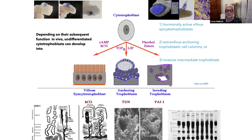When the expanded blastocyst enters into the stroma of the endometrium, cytotrophoblasts differentiate into three different syncytiotrophoblasts. The first is the villous syncytiotrophoblast, which is hormonally active and produces hCG. The second is the anchoring trophoblast — extra-villous anchoring trophoblast cell columns that enter the endometrium — and the invasive intermediate trophoblast. All these different trophoblasts make the difference in completing implantation or failing the implantation process.